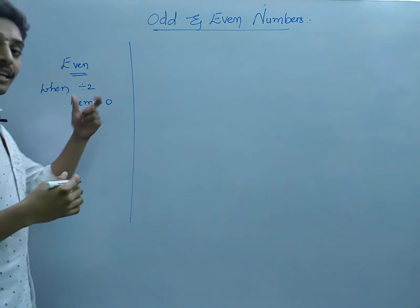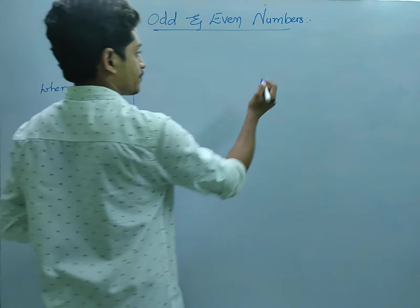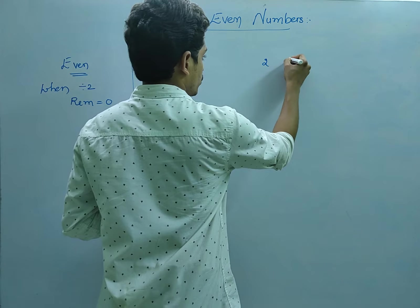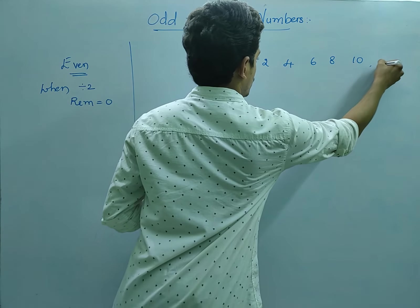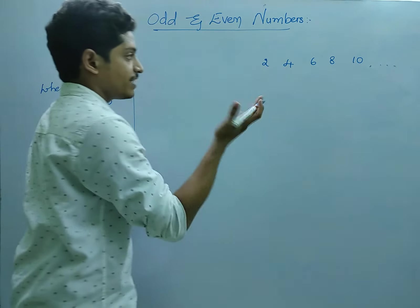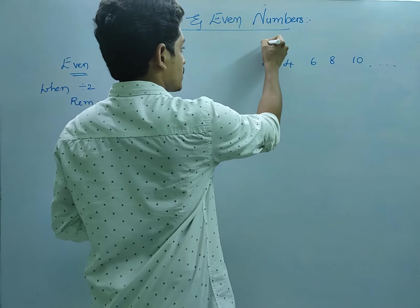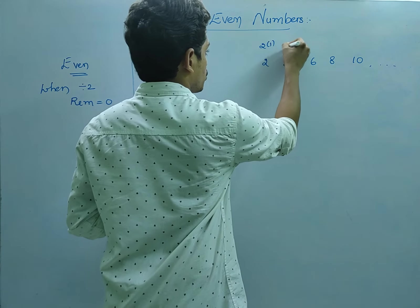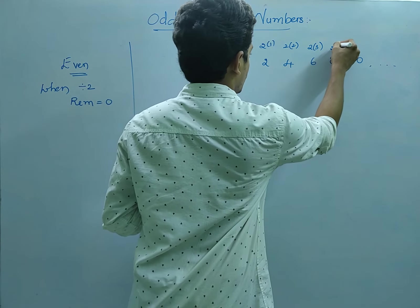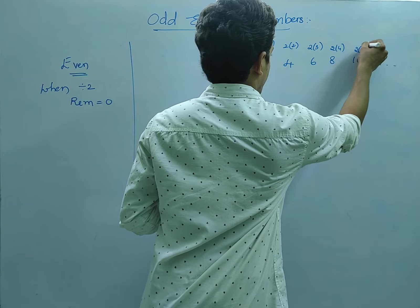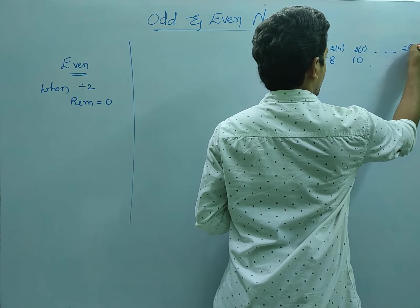For those particular numbers we call them even numbers. For example: 2, 4, 6, 8, 10 and so on. We can also say even numbers are simply multiples of 2 — 2×1=2, 2×2=4, 2×3=6, 2×4=8, 2×5=10 and so on, up to n number of digits, written as 2 into n.